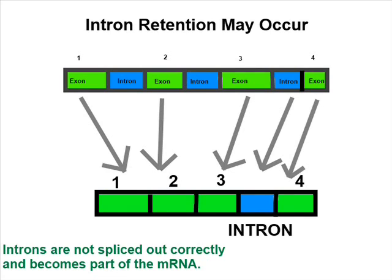Intron retention occurs when introns are not spliced out of the RNA transcript. It ends up being kept in the mRNA as part of its exon. It is a common splicing event.